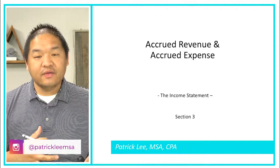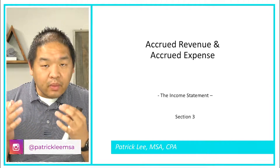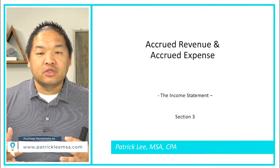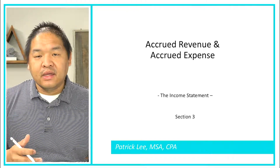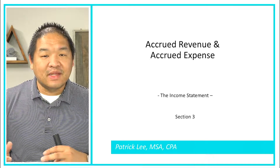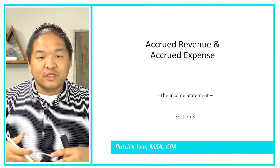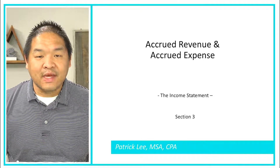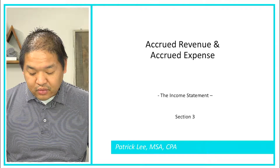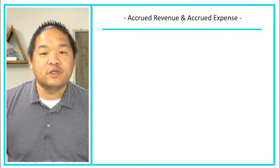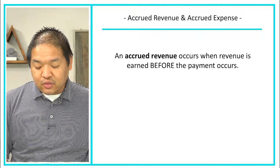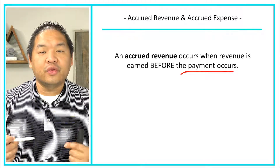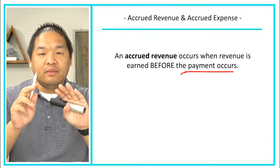In this lesson we're going to talk about accrued revenues and accrued expenses. The word 'accrued' basically means that we're incurring it but we haven't paid for it yet. Unlike the last lesson where we got paid beforehand, with accrued revenues and expenses the cash is going to come at the end of the service being provided.